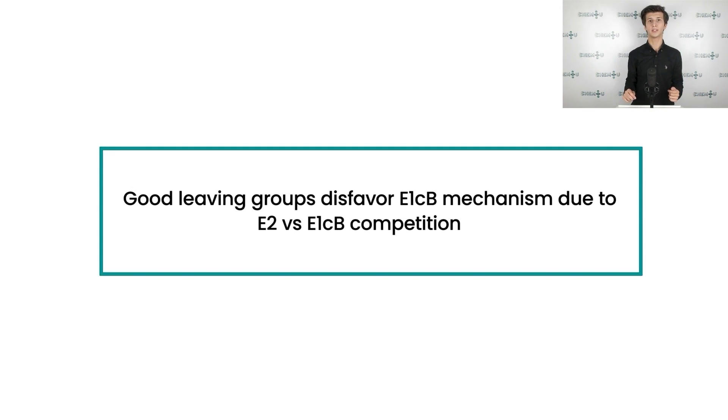The last factor to discuss is leaving group ability. Previously, we have seen that better leaving groups favored both E1 and E2 mechanisms. It was so due to the fact that C-X bond cleavage was included in the rate determining step, and thus higher leaving group ability favored both mechanisms. In the case of the E1CB mechanism, this statement is only partially true. Even though C-X bond cleavage represents rate limiting step, the good leaving groups disfavor E1CB mechanism. This, from the first sight counterintuitive trend, agrees with our previous knowledge.